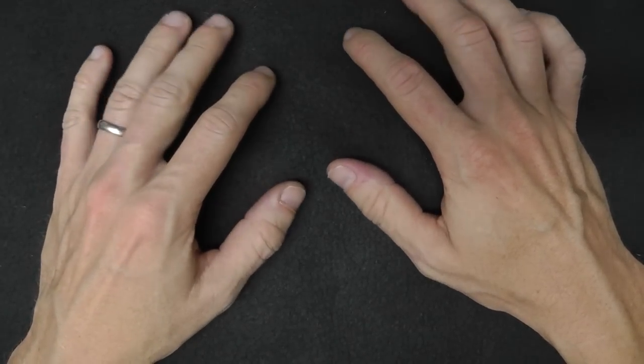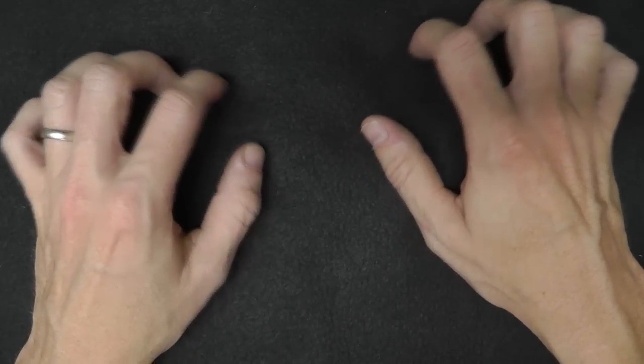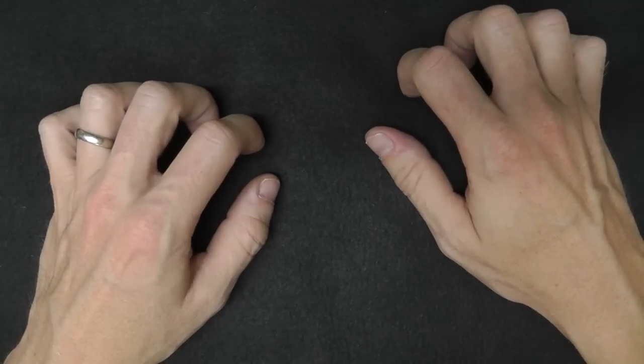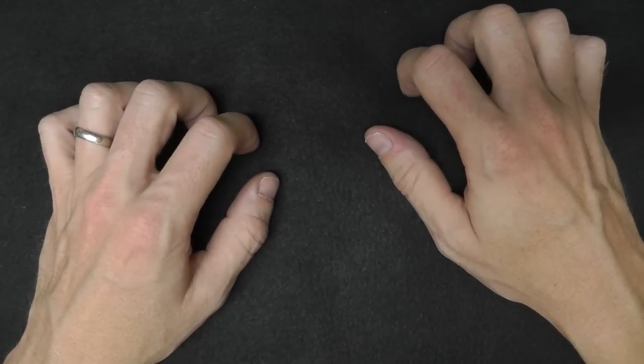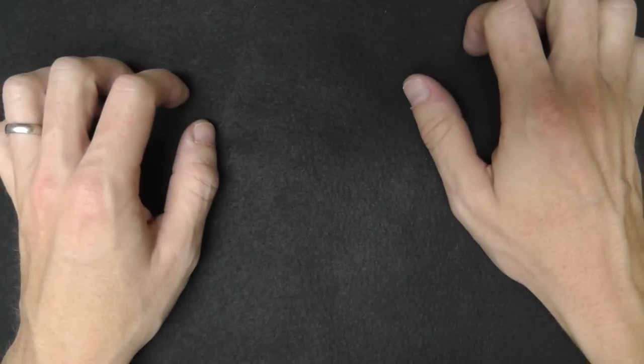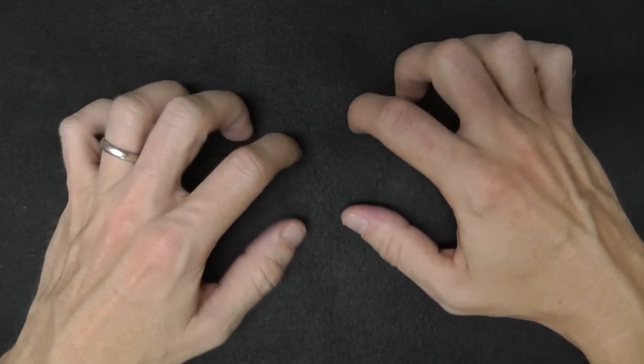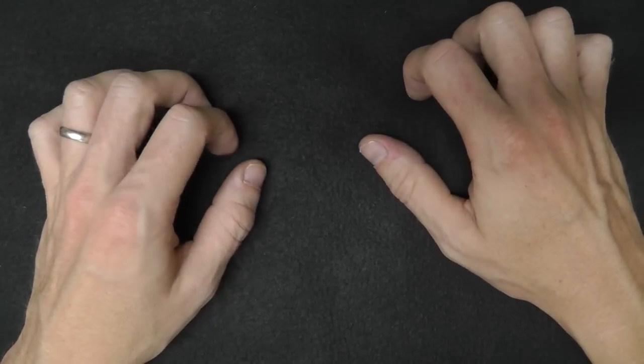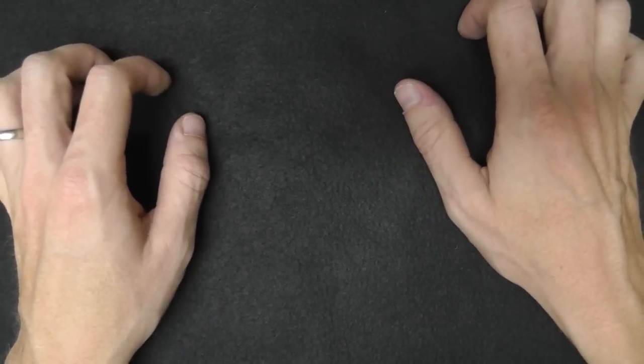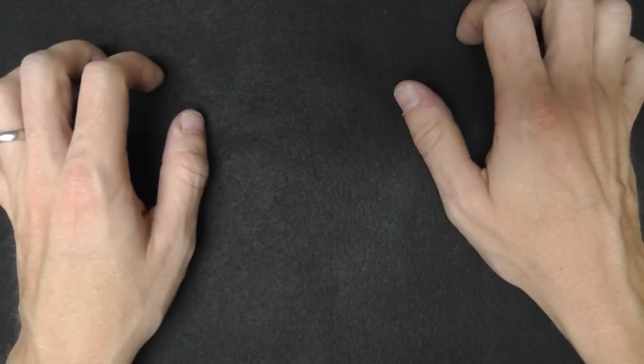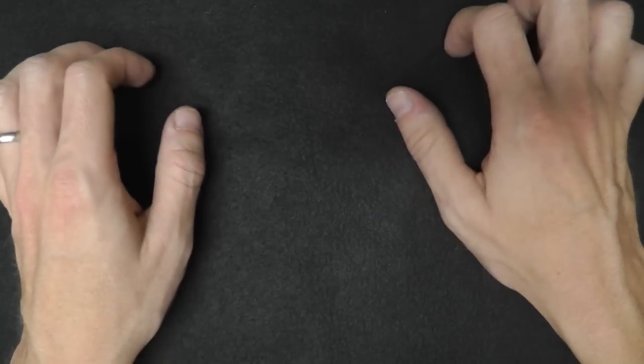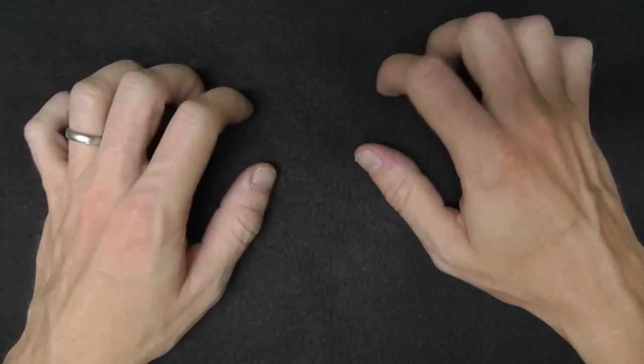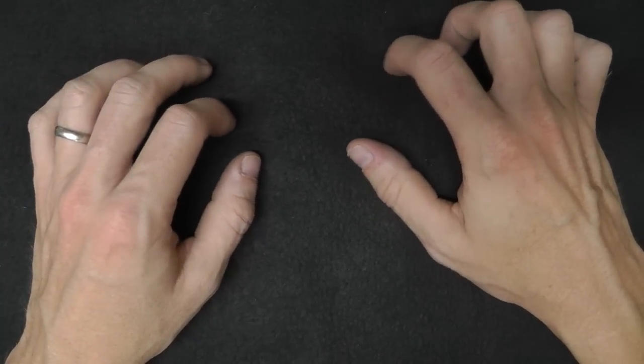It's a puzzle that consists of seven flat shapes called tans, which are put together to form shapes. The objective is to form a specific shape given only an outline or silhouette, using all seven pieces which may not overlap.